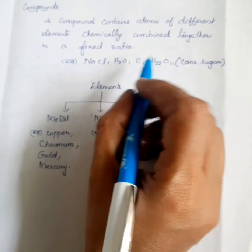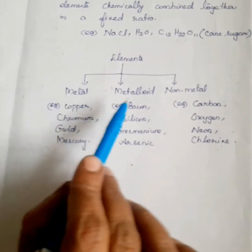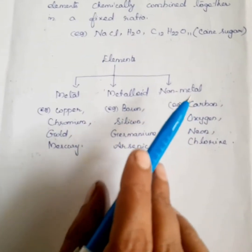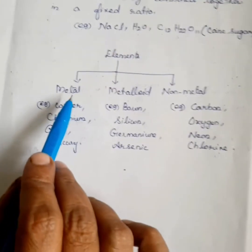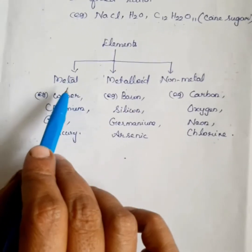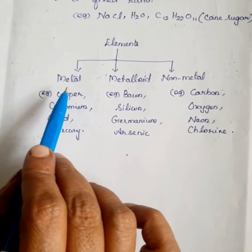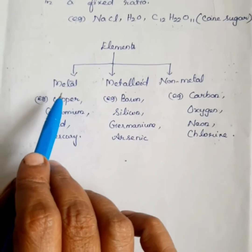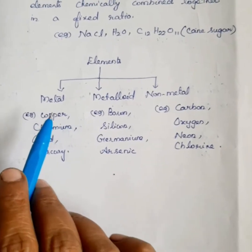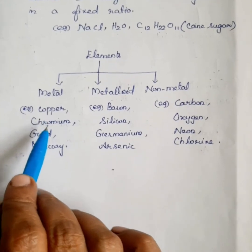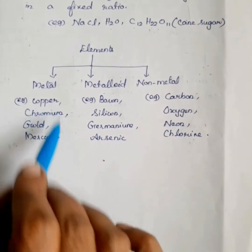How are elements classified? They are classified as metals, metalloids, and non-metals. Metals are good conductors of heat and electricity, and metals form basic oxides. For example, copper wire is a metal and a good conductor of electricity. Other examples of metals are copper, chromium, gold, and mercury.